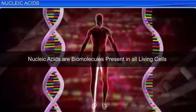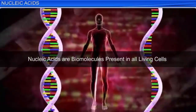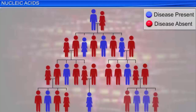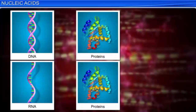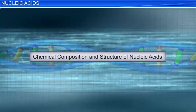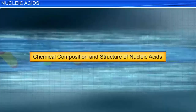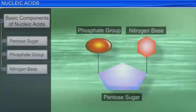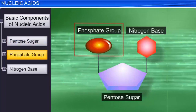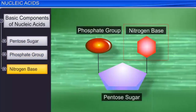Nucleic acids are biomolecules present in all living cells and are responsible for transmitting genetic information from one generation to the next. In other words, they are the carriers of heredity. They are found to exist along with certain proteins. Proteins along with the nucleic acids constitute nucleoproteins. The basic components of nucleic acids include a pentose sugar, a phosphate group, and nitrogen-containing heterocyclic compounds called nitrogen bases.